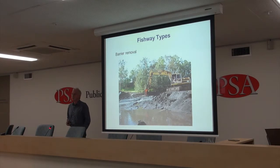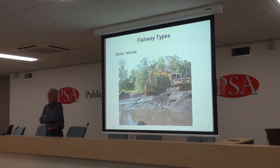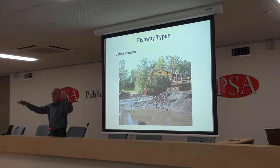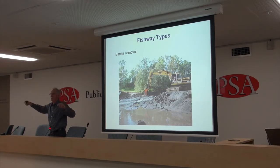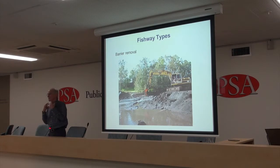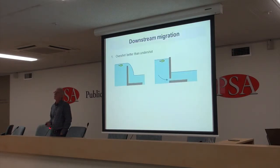John mentioned barrier removal — it's probably always your first choice. Interestingly, if you get a brief for a fishway, the fishway is really a tool to achieve certain outcomes. You have to focus on what the client's outcomes are. If their outcomes are about restoring migration — actually that's not even an outcome — your real outcome is improving fish populations or rehabilitating them. Sometimes the simplest solution is to remove the barrier. I know that's happened in a couple of cases in New South Wales where you might have thought a fishway was the better option. It's always worth canvassing that option, even if it's not in the brief.